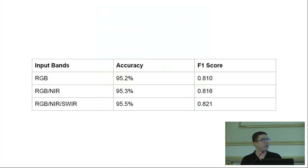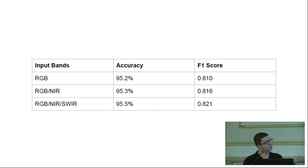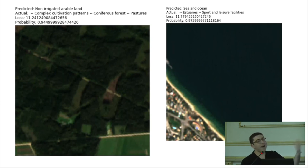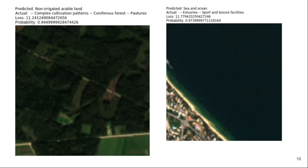What results did we get? For input bands of RGB, RGB with near-infrared, and RGB with near-infrared and short-wave infrared, accuracies look pretty close together. The F1 score shows a little more difference but not a significant one when you add in these other bands. Looking deeper at the examples with the top losses, the actual labels are hard to visibly distinguish or potentially mislabeled — for example, is it really an estuary or a sport and leisure facility? We think around 95% accuracy is the best achievable on this dataset given label noise. What's more important is that we now have models pre-trained on near-infrared and short-wave infrared bands that we can apply for the downstream task of land cover mapping.